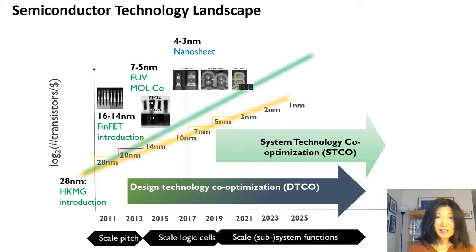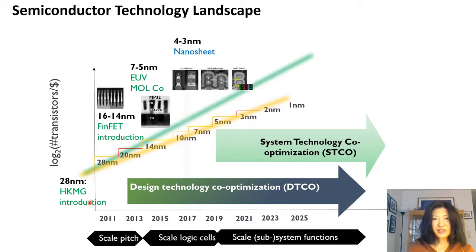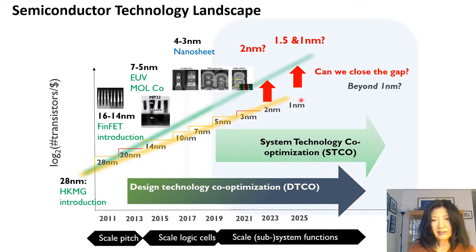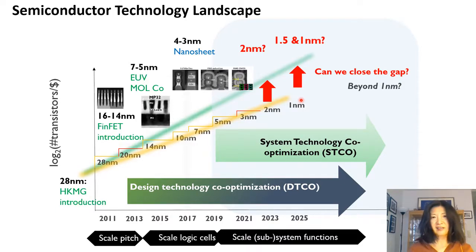Let's briefly look at semiconductor history and technology landscape. High-k introduction really started our industry in a very different innovation stage. New material introduction using 32nm, 28nm, and now nanosheet and 3nm adoption by some foundries — this is a very exciting time. Technology innovation is not sufficient alone; we need to innovate in the context of design and system. The grand challenge is achieving the same performance at 2nm, 1.5nm, and 1nm.